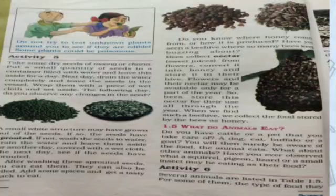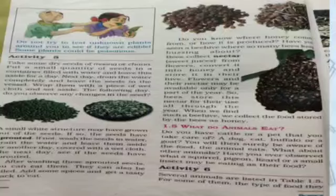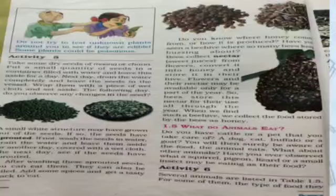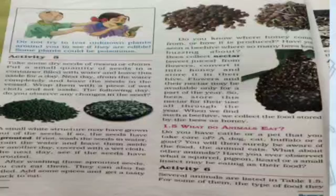Now, have you ever thought about where honey comes from? Bees collect nectar — a sweet flower juice — from flower to flower and convert it into honey, storing it in their beehive. Since flowers and nectar may be available only part of the year, bees store it for use all through the year, and we collect this stored food as honey.